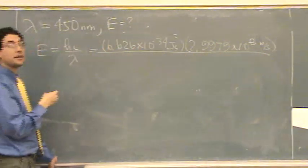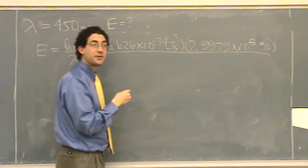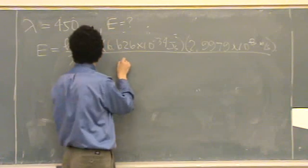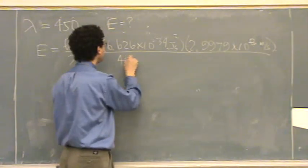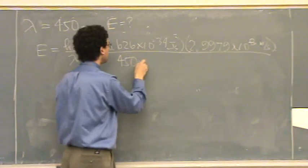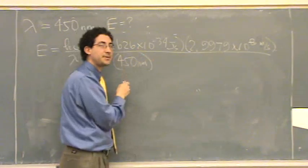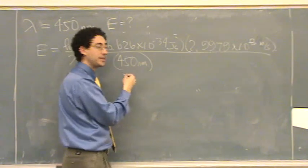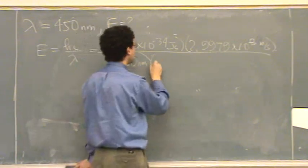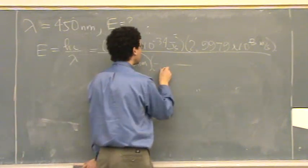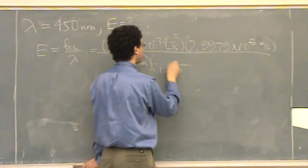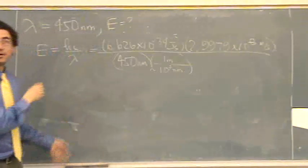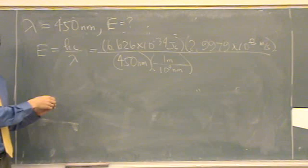And then lambda — make sure you convert this. You can do this in one step or two. 450 nanometers has to be in meters, because this is an SI units only equation. So you can go 10 to the 9 nanometers for every 1 meter. And whatever that is.